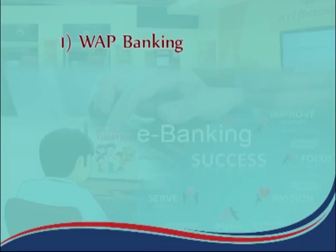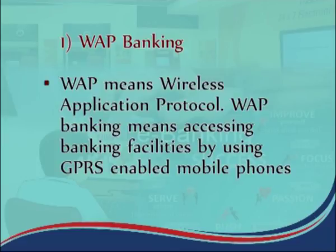Now let us understand how we can use the latest smart devices and apps for mobile banking. First is WAP banking. WAP means Wireless Application Protocol. WAP banking means accessing banking facilities using GPRS-enabled mobile phones. WAP banking is mobile banking access through a mobile site from the phone's browser, similar to a mobile banking application. Instead of installing an app from the Play Store or App Store, a customer can access WAP banking through the phone's browser.